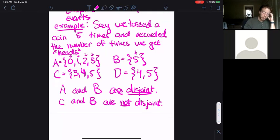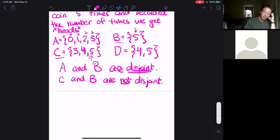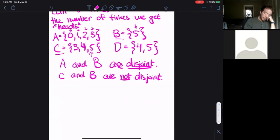In contrast, C and B are not disjoint because both C and B contain the event five, that we flipped a coin five times and every single time showed up heads.